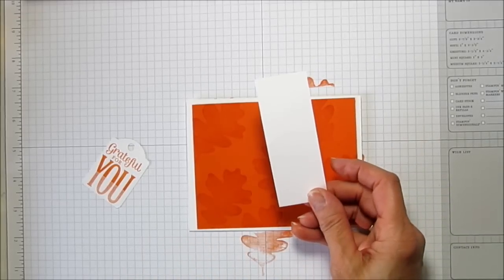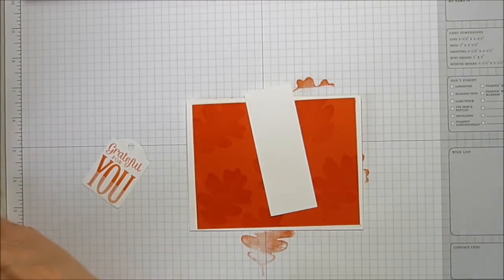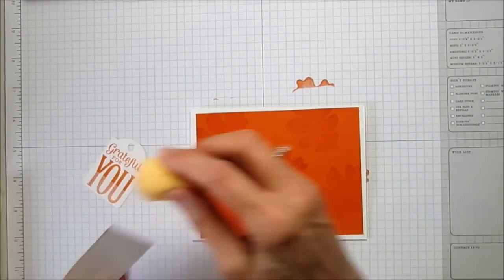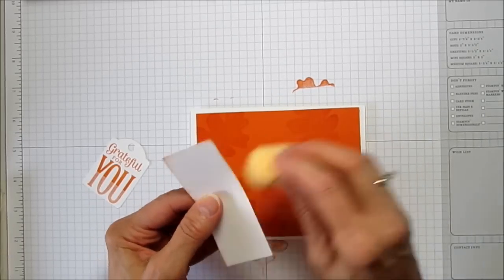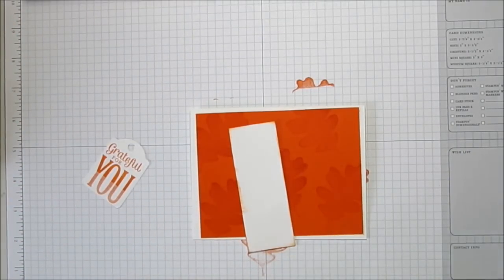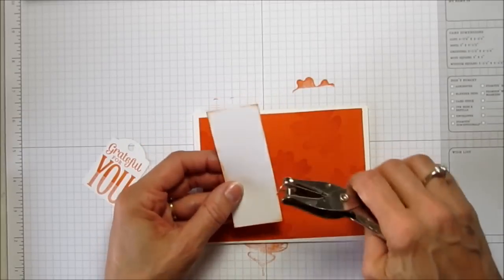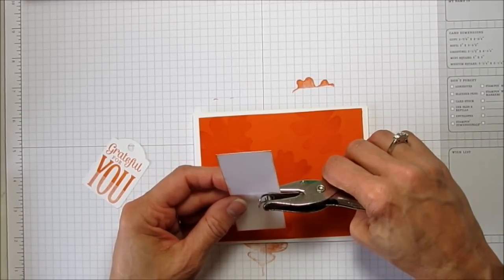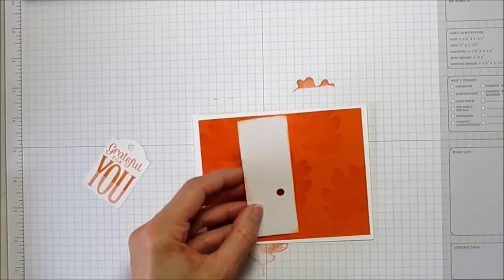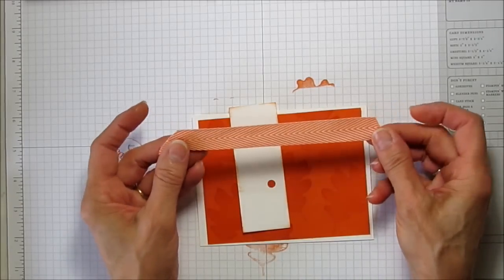Then I'm going to take this other piece, the one and a half by four, and I am going to sponge the edges with Pumpkin Pie. It's just a little bit too white for me, so I'm just going to sponge the edges. I'm going to grab the hole punch again and I'm going to put it maybe a third of the way up.